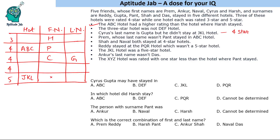Shah and Naval both stayed at four-star hotels, where Shah is a last name and Naval is a first name. Since we have Prem and Cyrus already placed in four-star hotels, Naval must be another person in a four-star hotel. Shah is a surname, and since we have Gupta already, Shah and Gupta belong to different people. This means Frame's last name is Shah — so that is filled in as well.